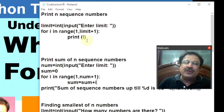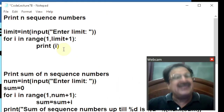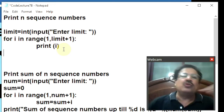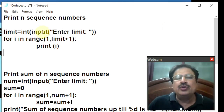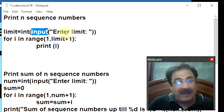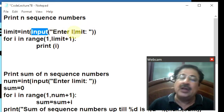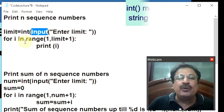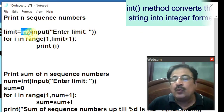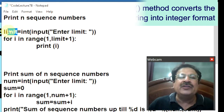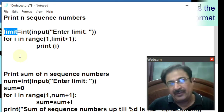What is the first program that we'll do? We'll learn to print the N sequence numbers — that is, the limit will be entered by the user. So we'll ask the user to enter the limit, and we'll be making use of the input method. We know that the value entered by input will be in string format, so this input is nested inside the int method, which will do typecasting.